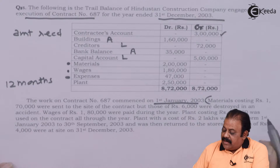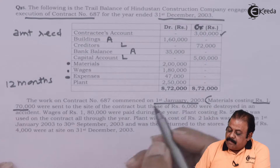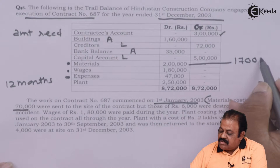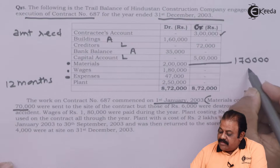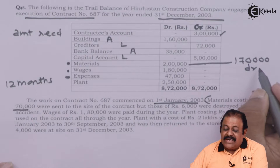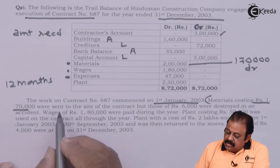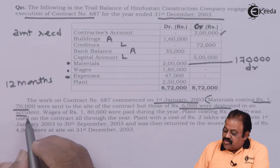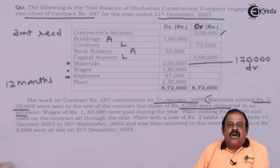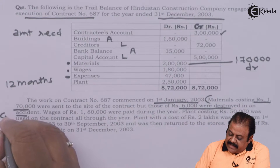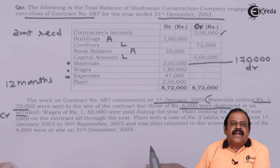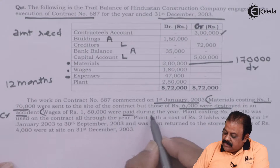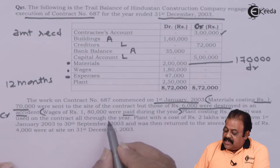Material costing 1 lakh 70,000 was sent to the contract site, so that amount will be debited to the contract account. However, 6,000 worth of material was destroyed in a fire accident — this is not used for the contract, so it will be credited to the contract account and debited to the profit and loss account. Wages of 1 lakh 80,000 were paid during the year and will be debited to the contract account.